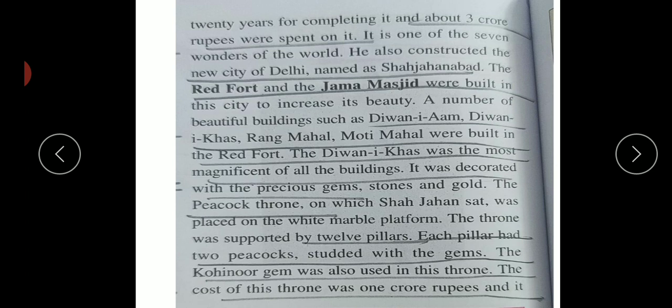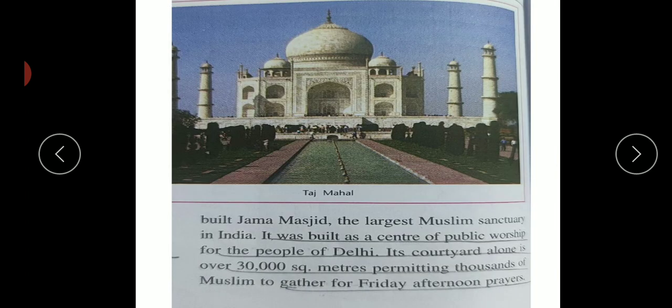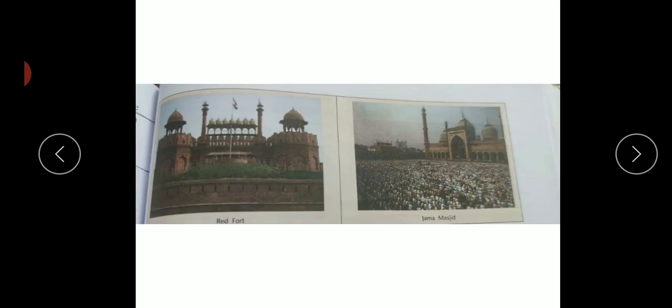As you can see in the picture, Shah Jahan built the Jama Masjid - the biggest and largest Muslim sanctuary in India - so that all people could come and worship there. In Delhi, its courtyards were about 30,000 square meters, permitting thousands of Muslims to gather and offer worship to Allah on Friday afternoon prayers. You can see pictures of the Red Fort and Jama Masjid - these are buildings made by him.